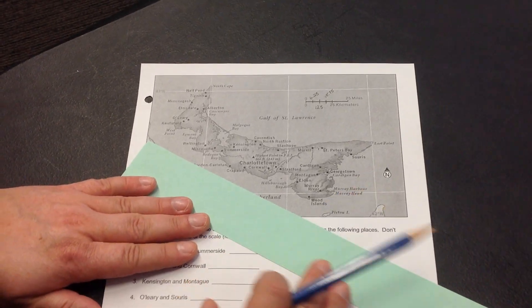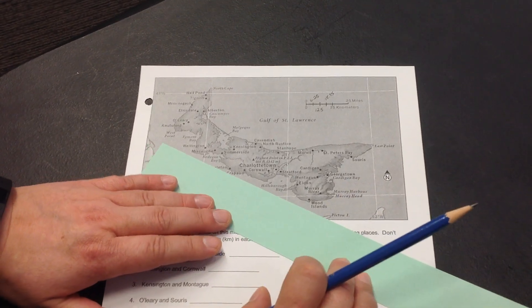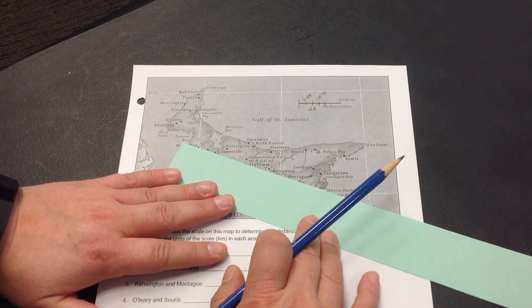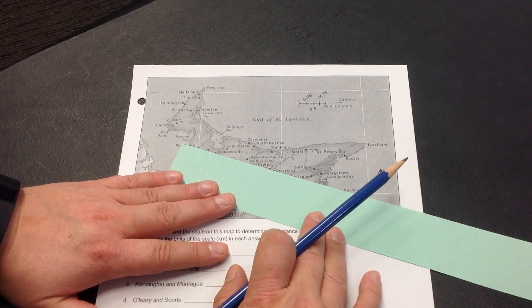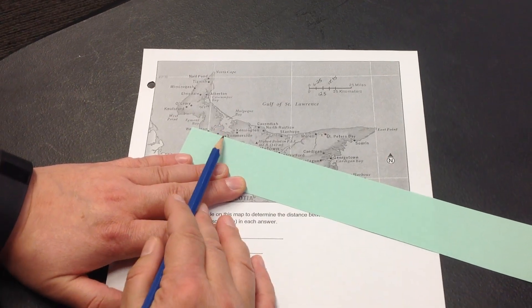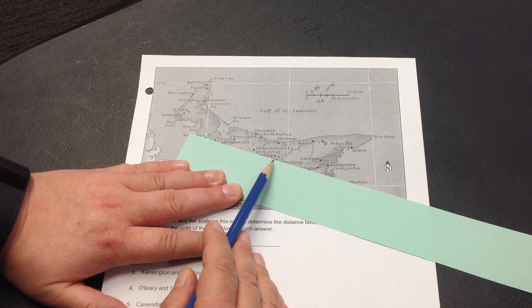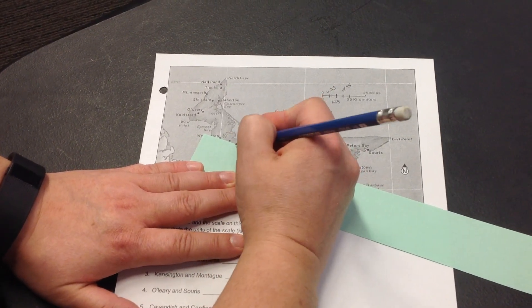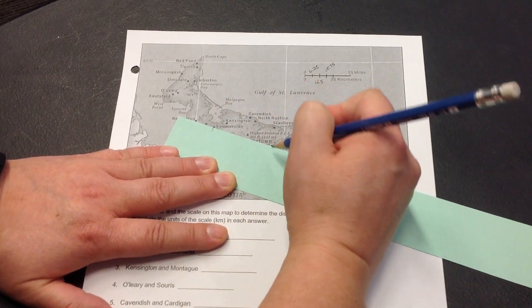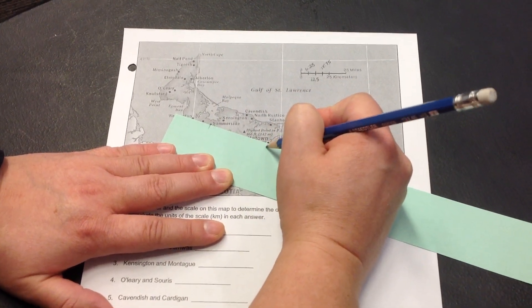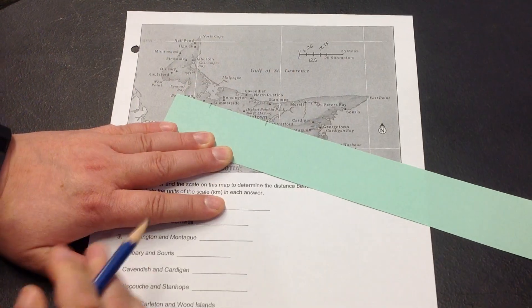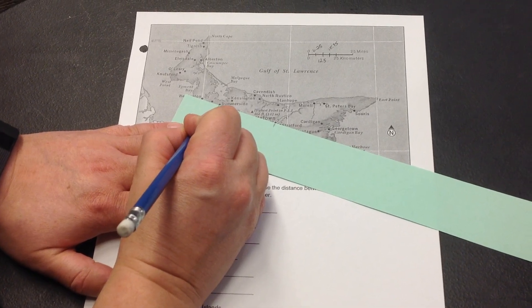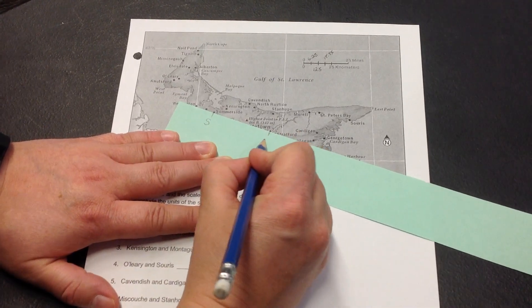The next thing we need to do since we've found these two communities, we're going to lay down our slip of paper so that we can see the dots that are represented by Summerside and Charlottetown. The next step is to make a mark that represents each of these places on the slip of paper, like that. The next step is to label each of those spots, S and C.